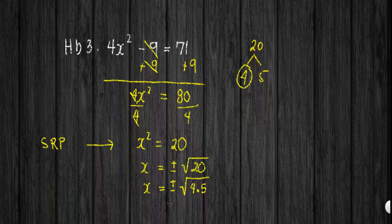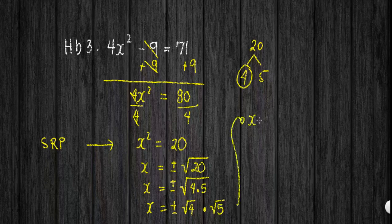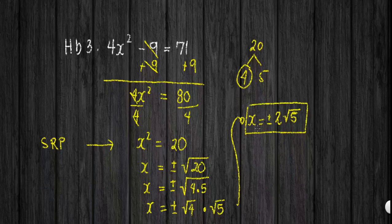I separate the radicals, so we have square root of 4 multiplied by square root of 5. Simplifying, we have x is equal to plus or minus 2 square root of 5, and this is the final answer. Our solution set is positive 2 square root of 5 and negative 2 square root of 5. That is our third example.